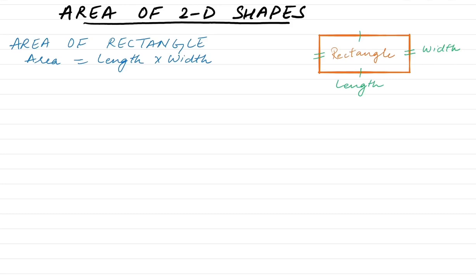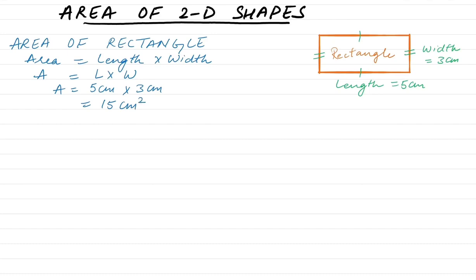We can take length as L, area as A, and width as W. Suppose we have the length 5 cm and width 3 cm. Now we can find the area of the rectangle by multiplying length into width, which is 5 times 3. So 5 cm times 3 cm is equal to 15 cm². The units are cm², because cm times cm is cm².